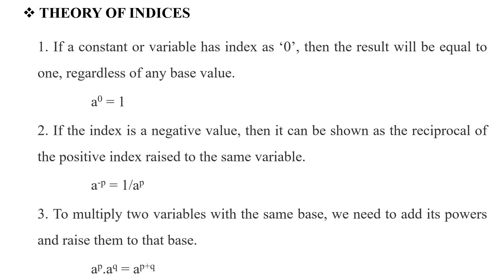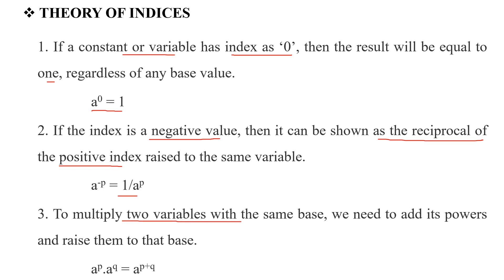Next, the theory of indices. First rule: if a constant or variable has index 0, then the result will be equal to 1 regardless of any base number. That is, a⁰ = 1. Second rule: if the index is a negative value, then it can be shown as the reciprocal of the positive index raised to the same value. That means a^(-p) = 1 / a^p.